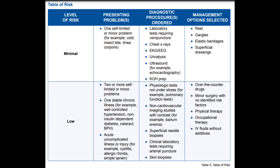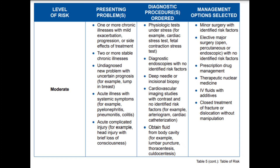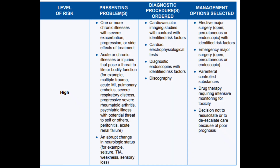Moderate risk includes one or more chronic illnesses with mild exacerbation, two or more stable chronic illnesses, an undiagnosed new problem with uncertain prognosis, acute illness with systemic symptoms, or acute complicated injury. Diagnostic procedures include physiologic tests under stress, diagnostic endoscopies with no identified risk factors, deep needle or incisional biopsy, cardiovascular imaging studies with contrast and no identified risk factors, or obtaining fluid from a body cavity such as lumbar puncture or thoracentesis. Management options include minor surgery with identified risk factors, elective major surgery (open, percutaneous, or endoscopic), prescription drug management, therapeutic nuclear medicine, IV fluids with additives, and closed treatment of fracture without manipulation.